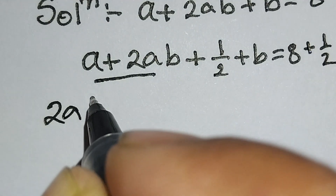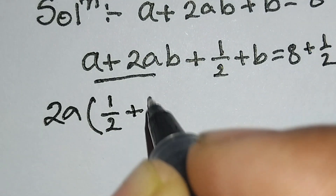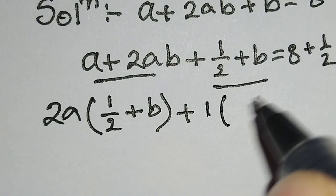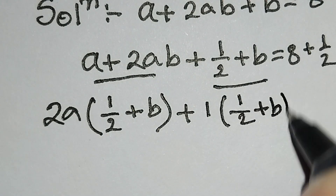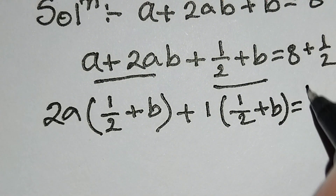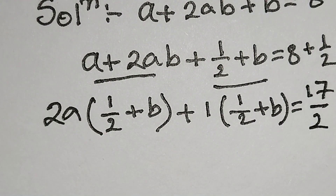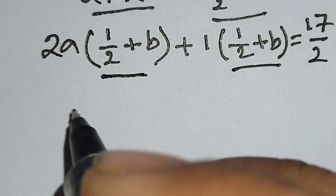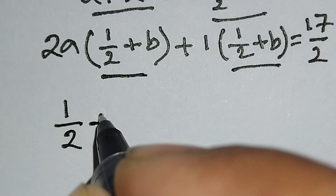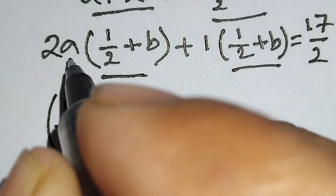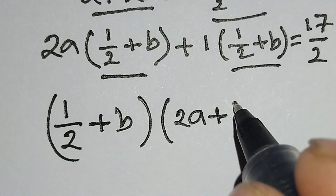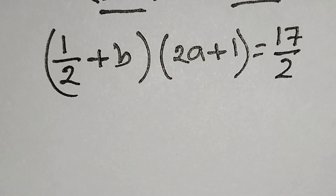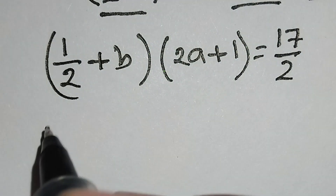From here we can take 2a common, so we can write 2a common (1/2 + b). Then we can take 1 common: 1·(1/2 + b) = 8 + 1/2 = 17/2. From here we can take common (1/2 + b), so we write (1/2 + b) times (2a + 1) = 17/2.